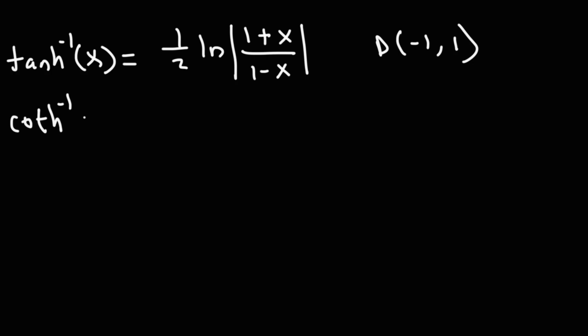Now for the inverse hyperbolic cotangent function, it's very similar to the previous one. It's 1 half natural log. Now it's going to be x plus 1, which is the same as 1 plus x, but on the bottom, it's x minus 1 instead of 1 minus x. Now the domain for this is going to be negative infinity to negative 1 union 1 to infinity.